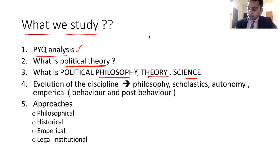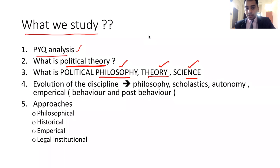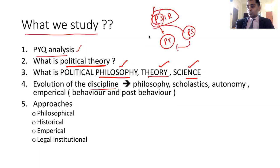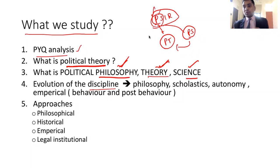What is political theory? I am going to discuss what is the difference between philosophy, what is the difference between theory, and what is science. We have to know: political philosophy, political theory, political science — and how the discipline has evolved. We are political science and international relations students. The first thing is, you have to know what is political theory and what is political philosophy.